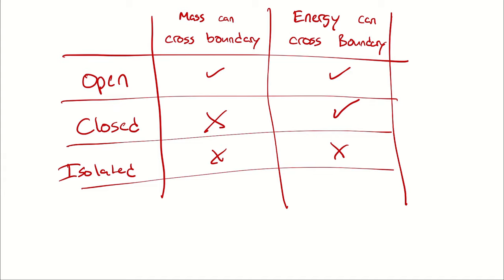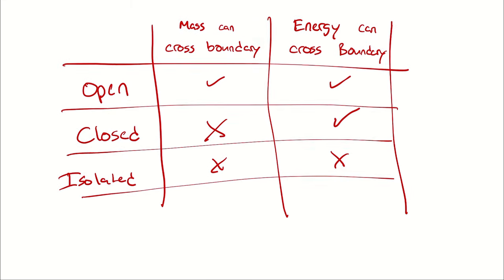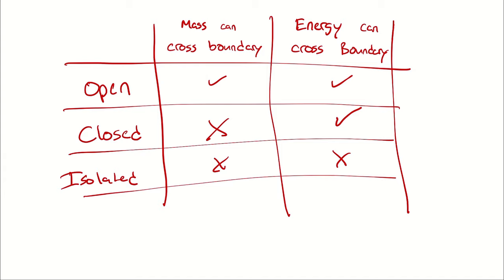And note that there is no need to establish a case where mass can cross but energy can't because the mass itself brings energy with it, so we cannot have a fourth possibility here. It's also worth noting that when we treat a system as being open or closed or isolated, we are not necessarily describing what it actually is. We are describing how we're modeling it.